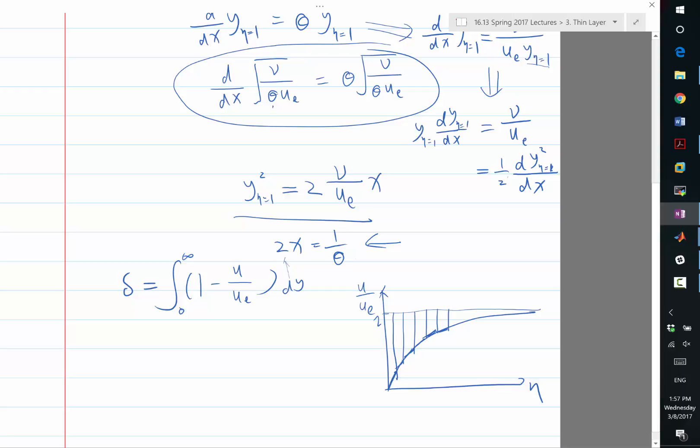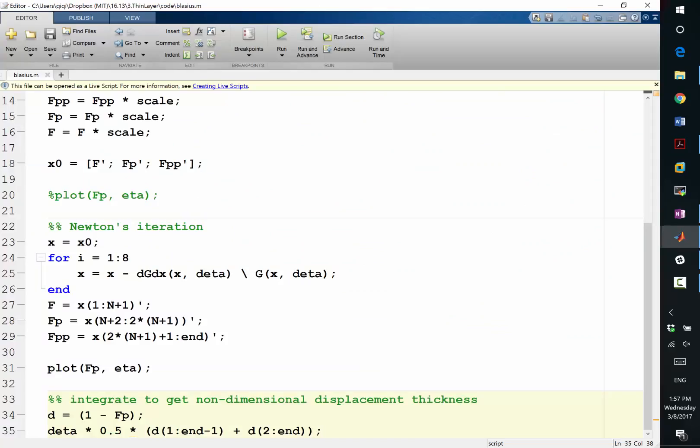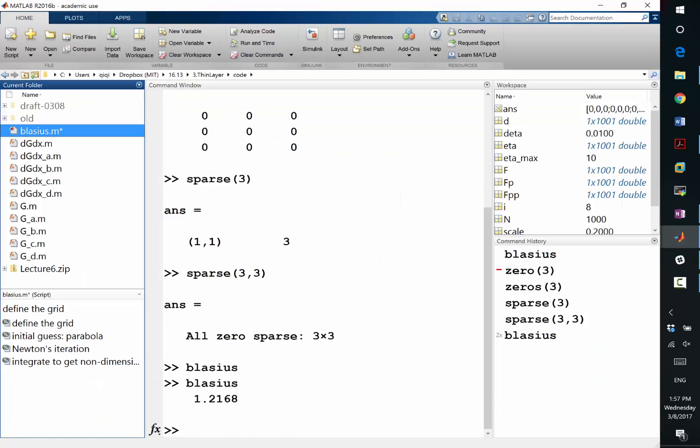I'm using small trapezoids to approximate the area above this curve. So the area of the trapezoid is half of this plus this times d eta. So this is what I'm doing.